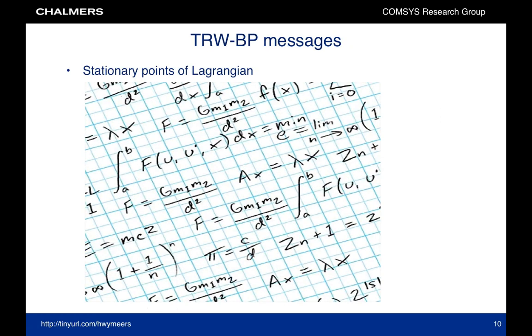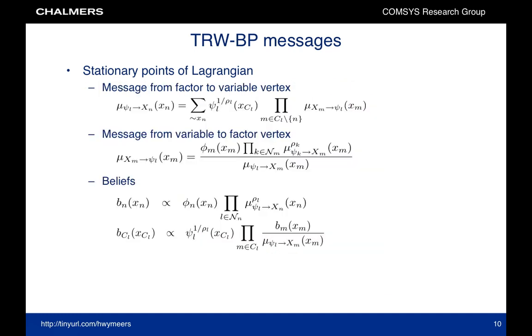We can now solve this optimization problem by writing down the Lagrangian, and taking the derivatives with respect to b. The details of the mathematical derivations can be found in the paper. When all the dust has settled, we find the following expressions. We find messages from factor vertices to variable vertices, messages from variable vertices to factor vertices, beliefs of single variables, and beliefs of groups of variables. It is easy to see that when all the factor appearance probabilities are 1, we find standard belief propagation, and when all the interactions are pairwise, we find standard tree-weighted belief propagation.